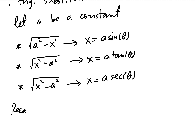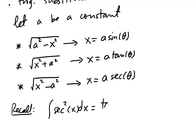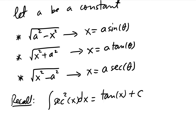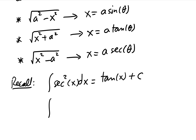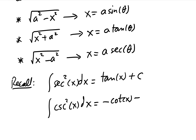Recall: the integral of sec²(x) dx is tan(x) + C, and the integral of csc²(x) dx is −cot(x) + C.